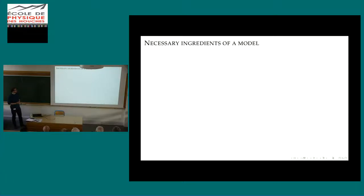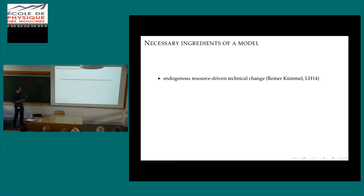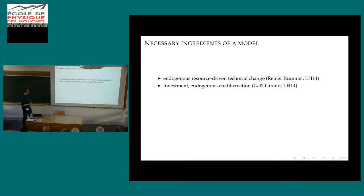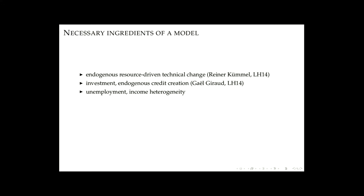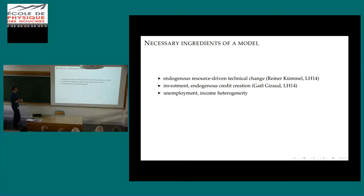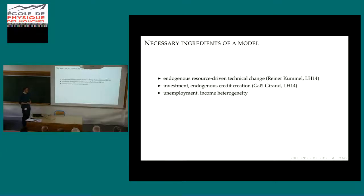To get out of this dilemma, the necessary ingredients are surely something like endogenous resource-driven technical change, which was presented by Reiner Koemel four years ago here. Also, endogenous credit creation and the relation to banking money, as Gail Giro presented four years ago. We simply need something such as unemployment and income heterogeneity—where do resource rents end up, etc.